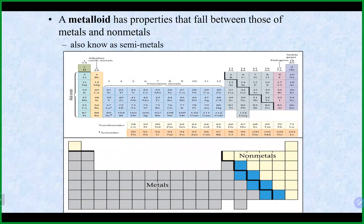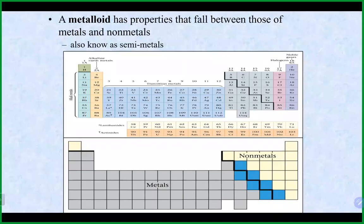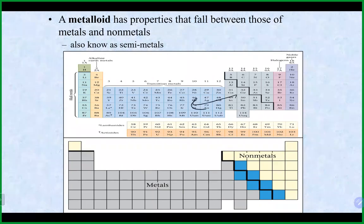Metalloids, also called semi-metals, have characteristics that fall on both sides — they have some properties similar to metals and some similar to nonmetals. This makes sense given their position on the periodic table, sitting between the metals on the left and nonmetals on the upper right.